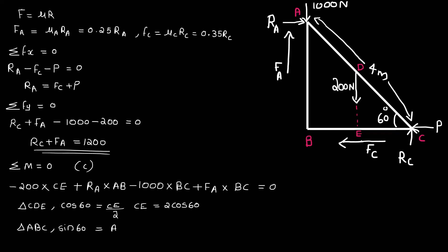Using triangle geometry: sine 60 equals opposite side over hypotenuse, giving AB over 4, so AB equals 4 sine 60. Cosine 60 equals adjacent side over hypotenuse, giving BC over 4, so BC equals 4 cosine 60.